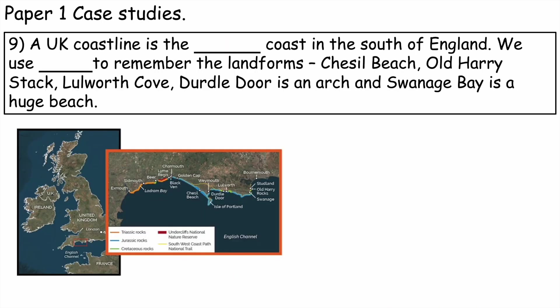Number nine: a UK coastline is the Dorset Coast in the south of England. We use COLDS to remember the landforms: Chesil Beach, which is a landform of deposition and also a bar or barrier beach; Old Harry, a stack (headland → crack → cave → arch → stack → stump); Lulworth Cove, a perfect example of headlands and bays — the soft rock with a lovely sandy beach, with more resistant rock headlands either side; Durdle Door, an arch; and Swanage Bay, a huge sandy beach with lots of money invested in coastal management including groynes, rock armour, and sea walls.